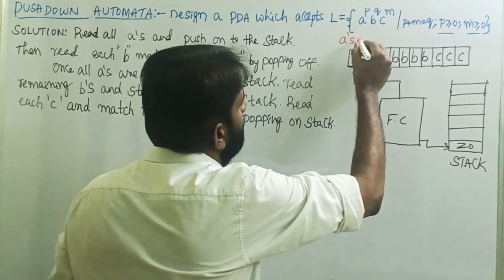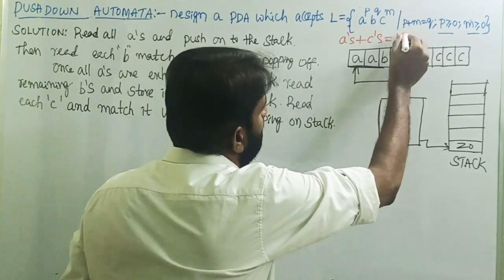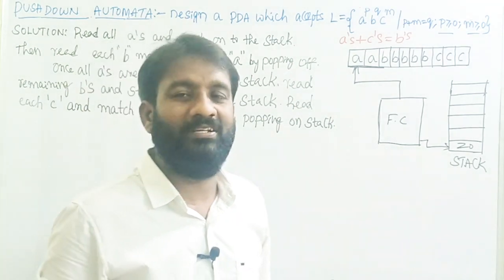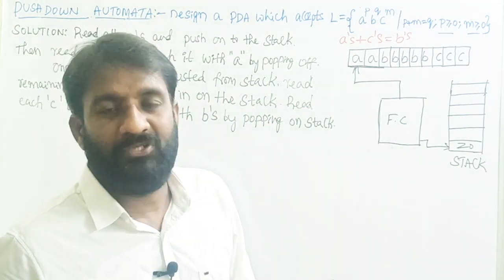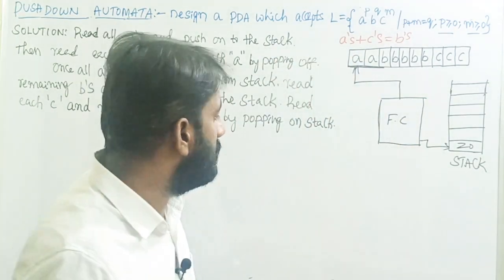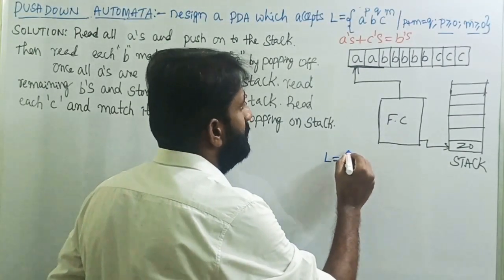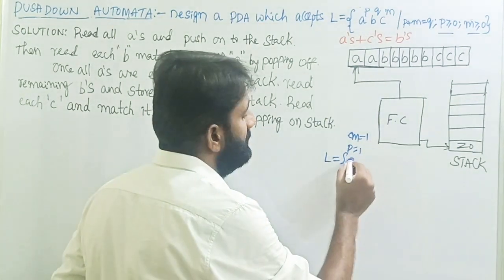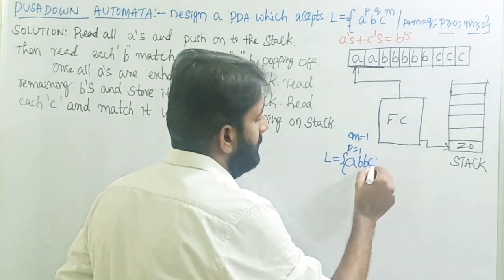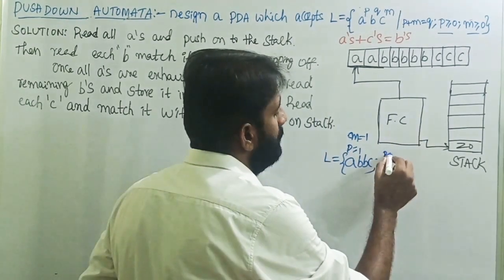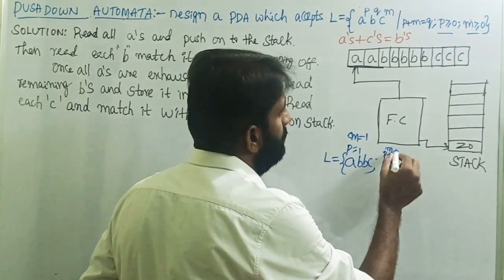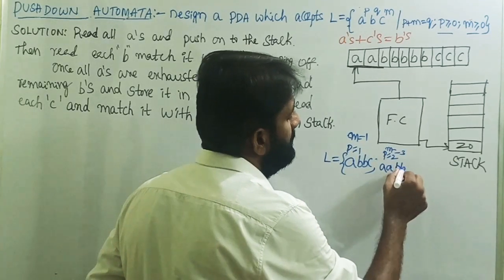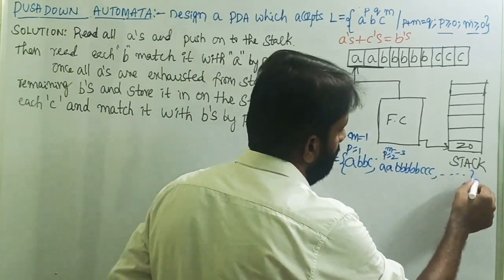Before writing the transitions and graphical notation, first find out what strings are possible over this language. For example, if P equals 1 and M equals 1, the possible string is one A, two B's, and one C. If P equals 2 and M equals 3, the possible string is two A's, five B's, and three C's, and so on.